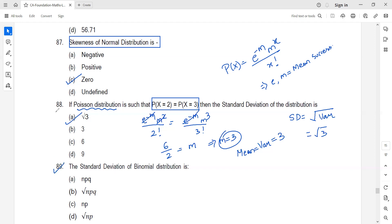Question 89: The easiest question. Standard deviation of binomial distribution is directly from the module: root of n into p into q.